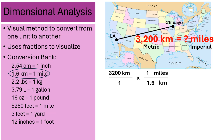The mile goes with the number one. The two kilometer units end up cross-canceling, and I'm left with a simple math problem. In the numerator it's just 3,200 times one mile, which is 3,200 miles. In the denominator it's 1 times 1.6, which is 1.6. I get out a calculator: 3,200 divided by 1.6, and there's my final answer — 3,200 kilometers is the same as 2,000 miles.